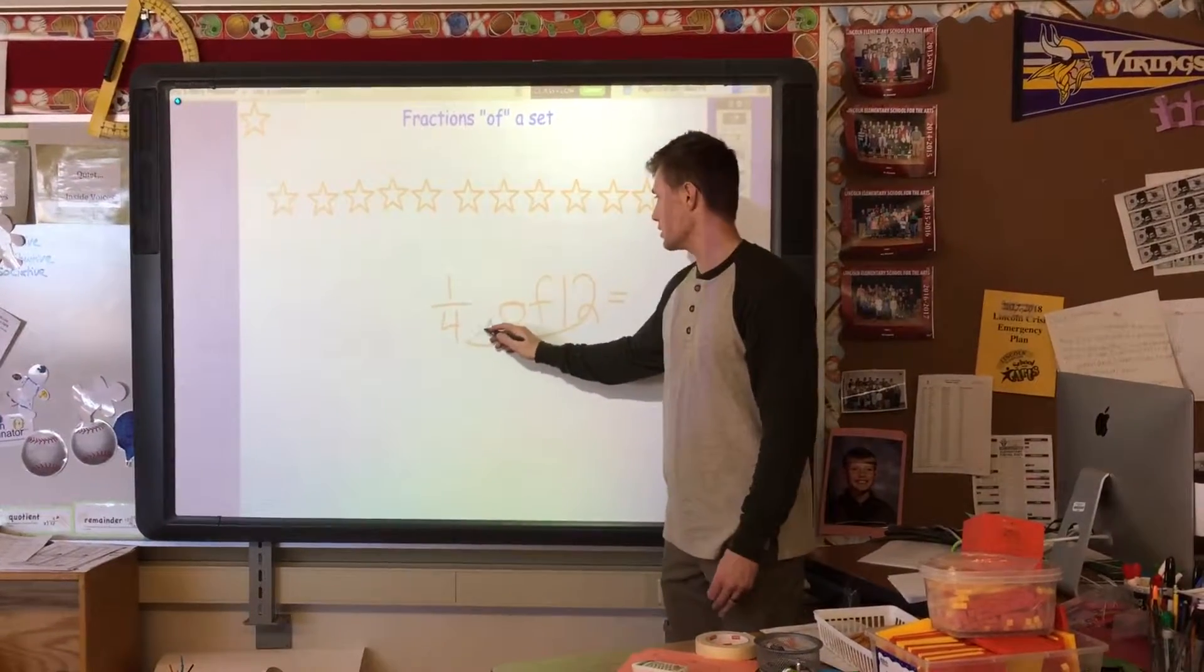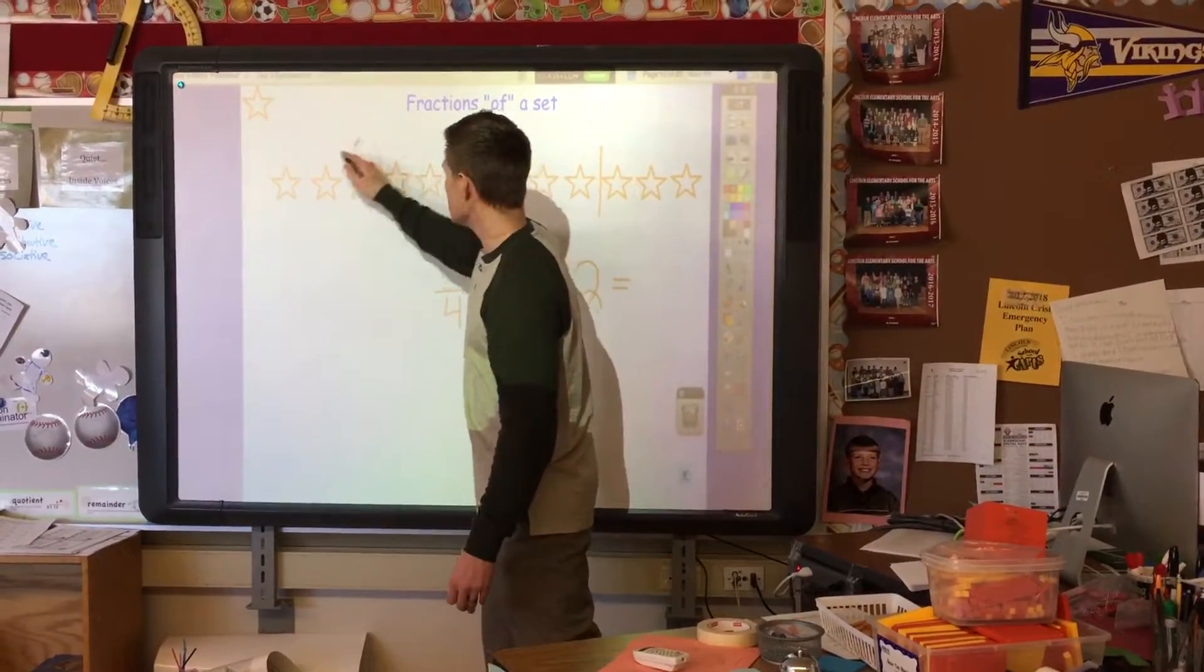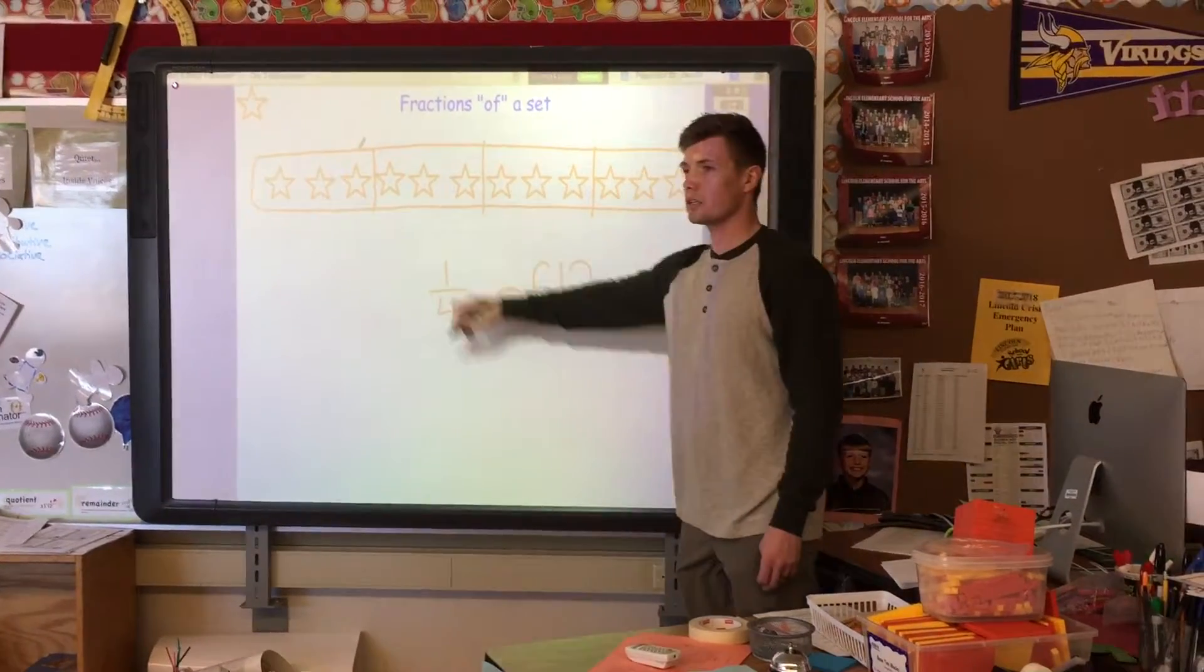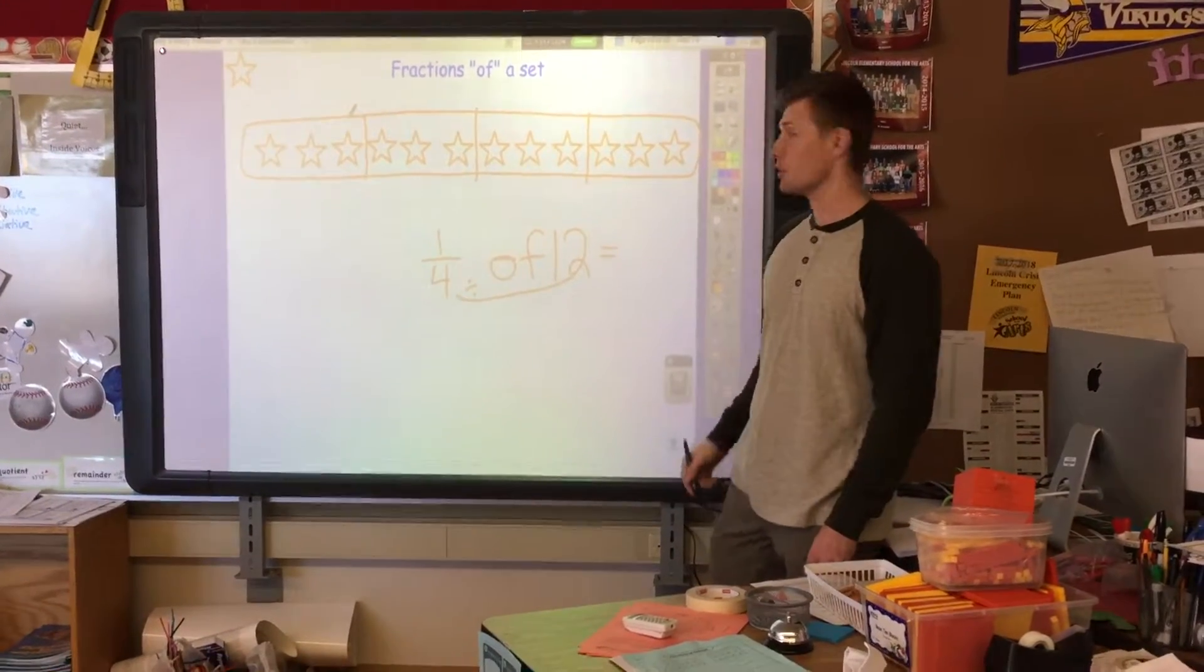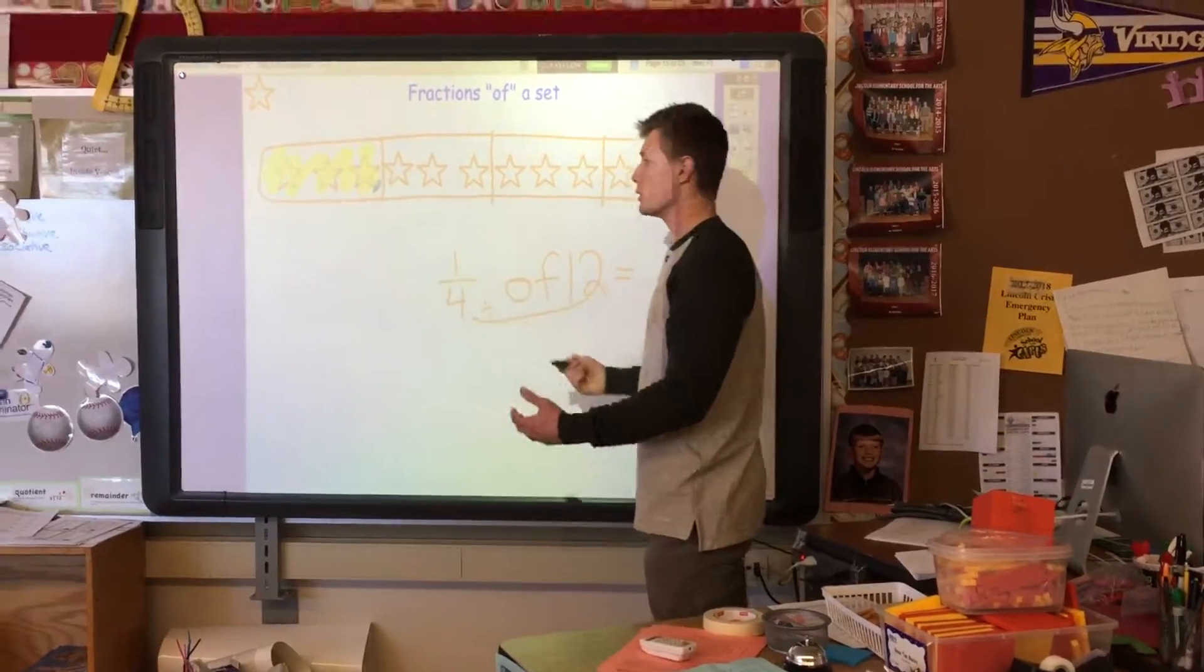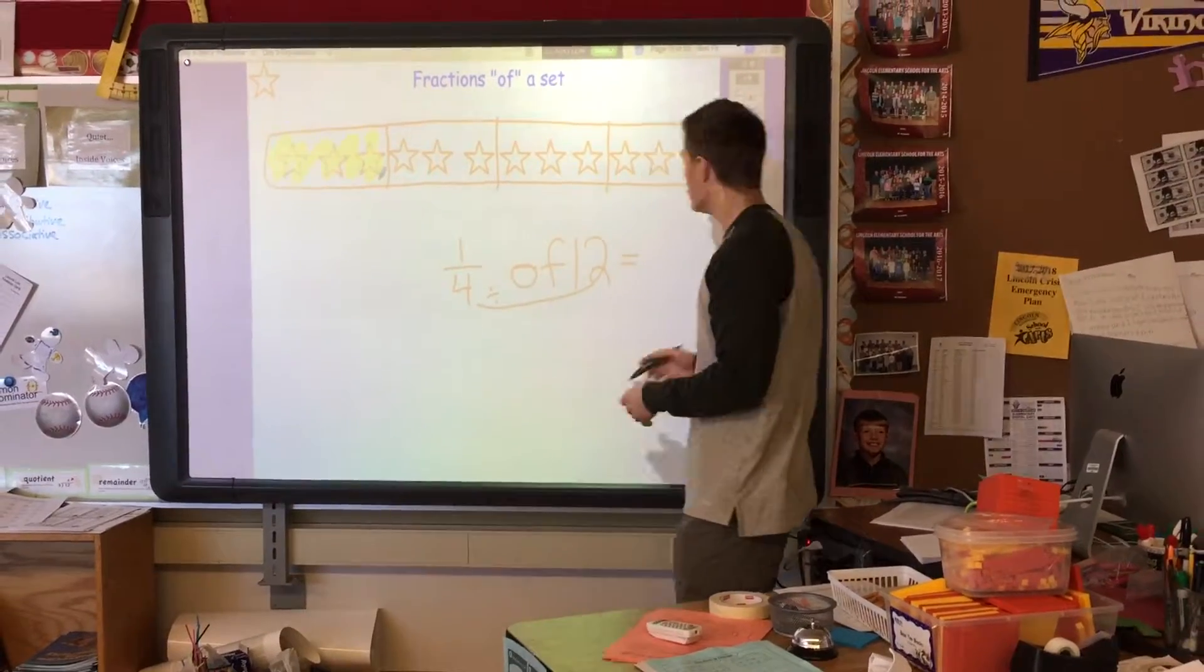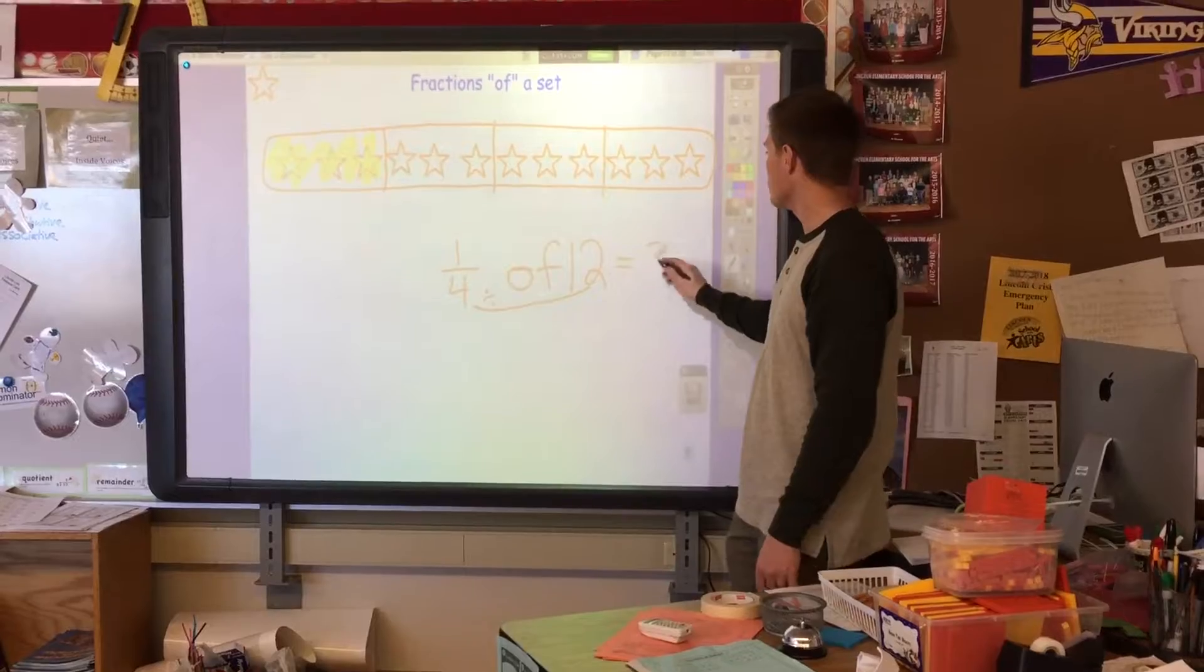We're going to divide this into four groups. So we should be able to see if I cut these into four equal groups, how many stars are in one group? Cherry? Three. So we have three stars in one group, which one-fourth of twelve is less than one-third of twelve because one-fourth is a smaller fraction. So we should be able to understand one-fourth of twelve is three.